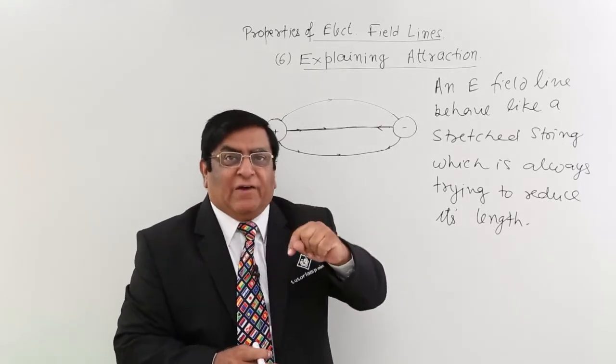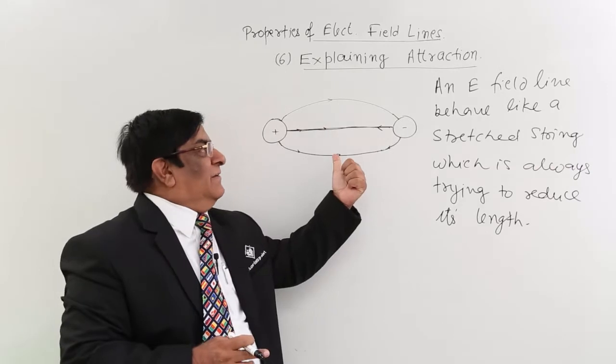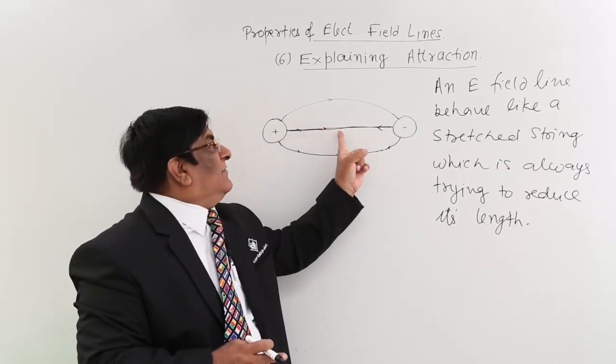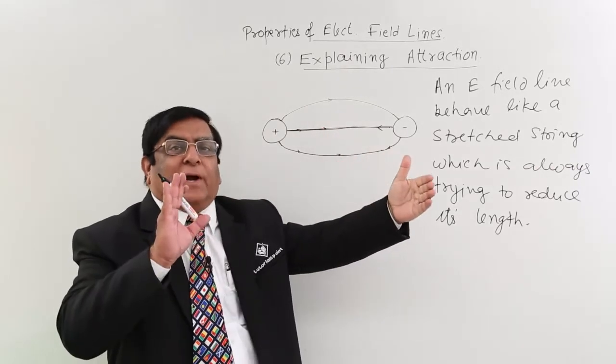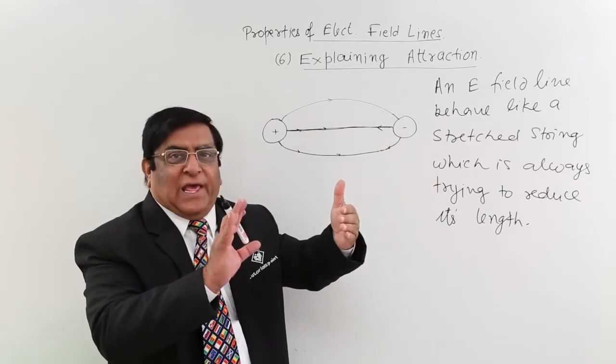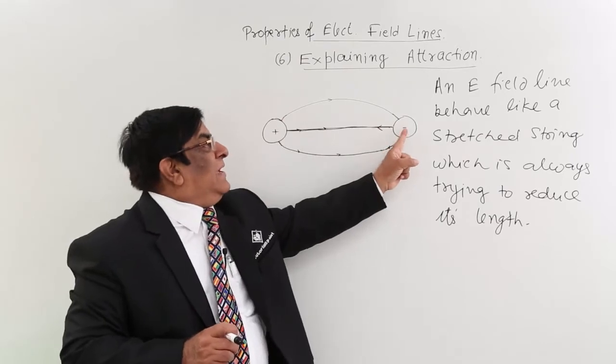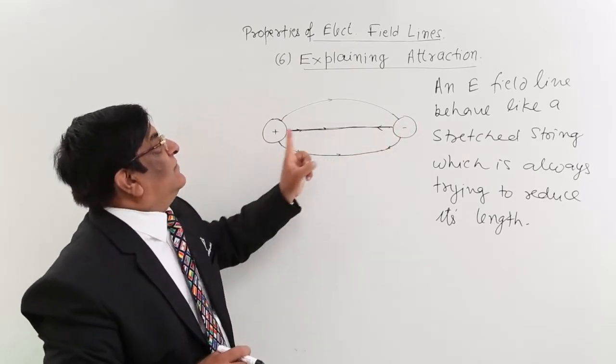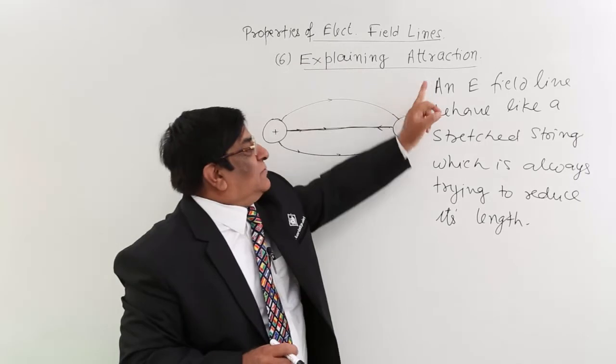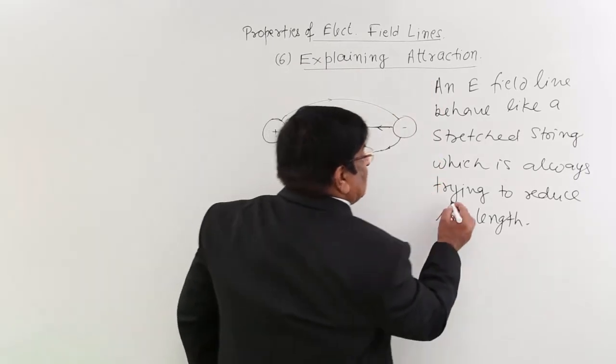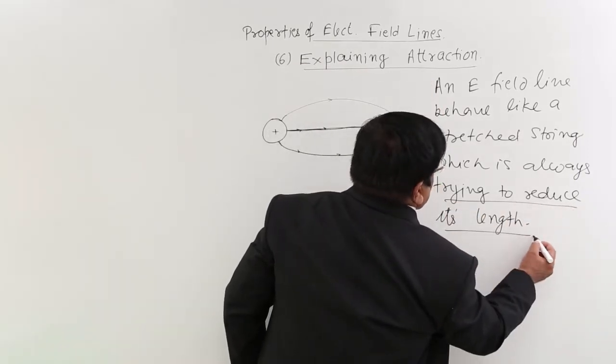So we have explained by the method of electric field lines that because it is the nature of electric field lines to come back to reduced length, therefore it applies force on them and this force is known as the force of attraction. This is how we explain attraction - it is trying to reduce its length.